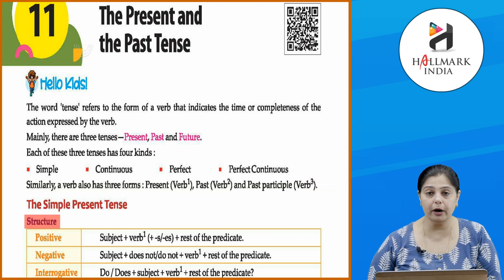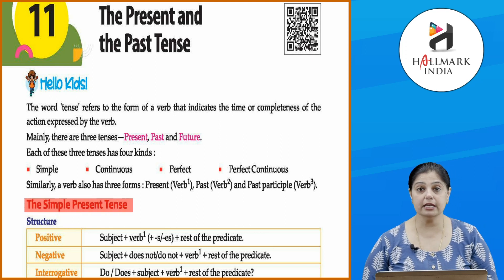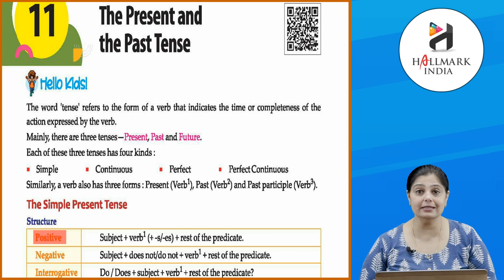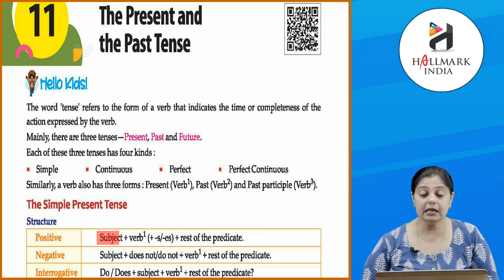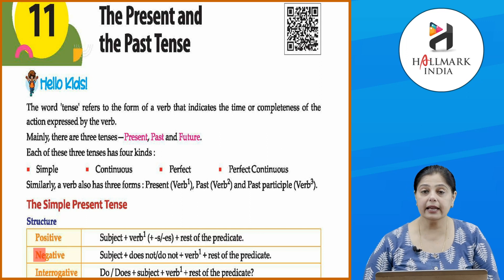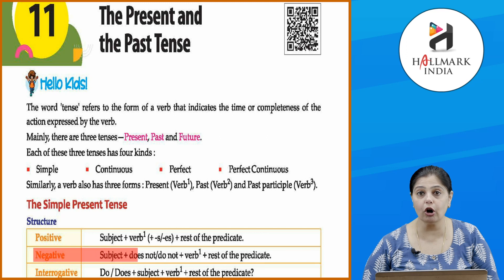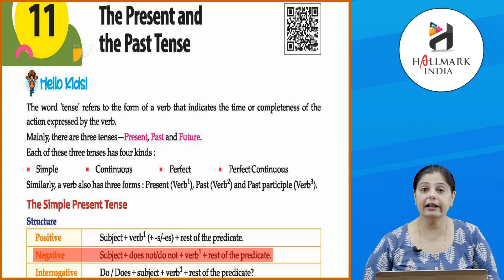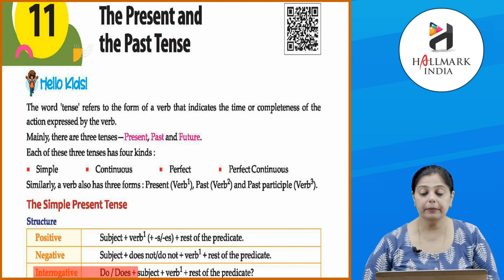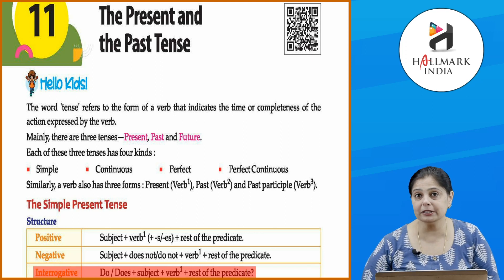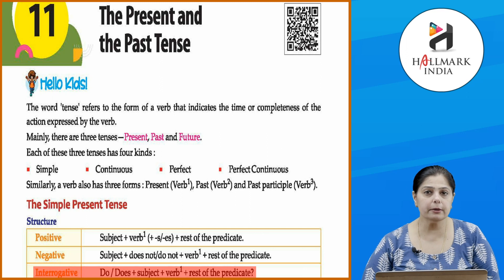Let's look at the simple present tense first. The structure: positive — subject plus verb one (with 's' or 'es') plus rest of the predicate. Negative — subject plus does not or do not plus verb one plus rest of the predicate. Interrogative — do or does plus subject plus verb one plus rest of the predicate. Examples will make this clearer.